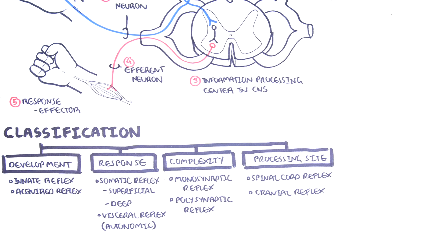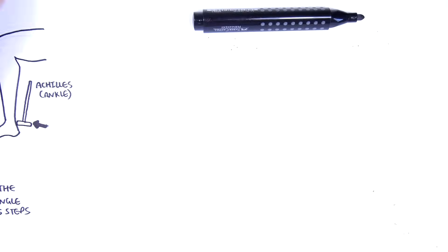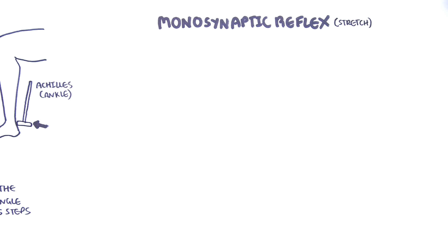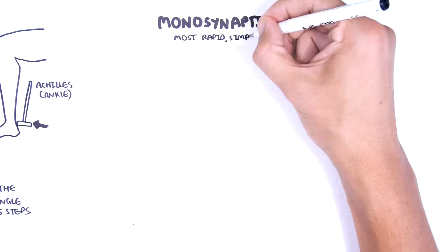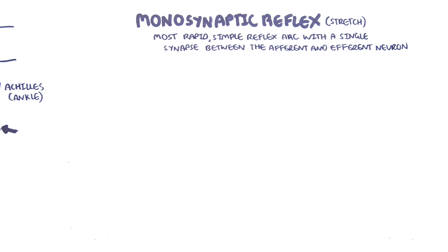In this video, we will talk about monosynaptic and polysynaptic reflexes, and mainly focus on the spinal cord as a site of information processing, because most of the reflexes we test are spinal reflexes. Spinal reflexes range from simple monosynaptic reflexes to more complex polysynaptic reflexes. Let's first talk about monosynaptic reflexes, the stretch reflex. The monosynaptic reflex is the most rapid, simple reflex with a single synapse between the afferent neuron and the efferent neuron.